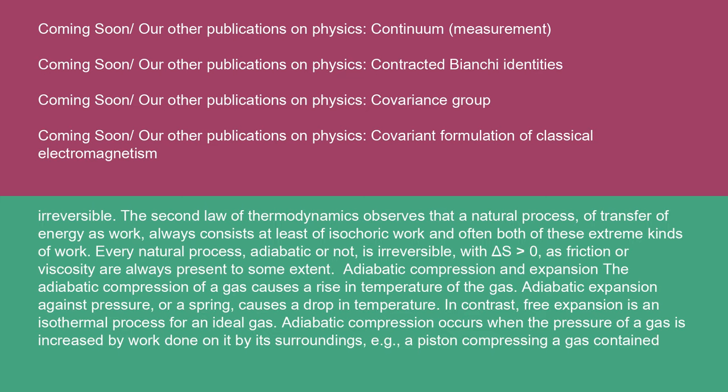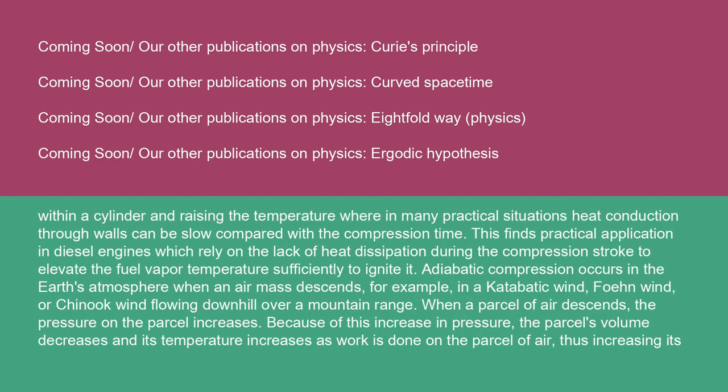Adiabatic compression and expansion: the adiabatic compression of a gas causes a rise in temperature of the gas. Adiabatic expansion against pressure or a spring causes a drop in temperature. In contrast, free expansion is an isothermal process for an ideal gas. Adiabatic compression occurs when the pressure of a gas is increased by work done on it by its surroundings — e.g., a piston compressing a gas contained within a cylinder — raising the temperature where heat conduction through walls can be slow compared with the compression time. This finds practical application in diesel engines, which rely on the lack of heat dissipation during the compression stroke to elevate the fuel vapor temperature sufficiently to ignite it.